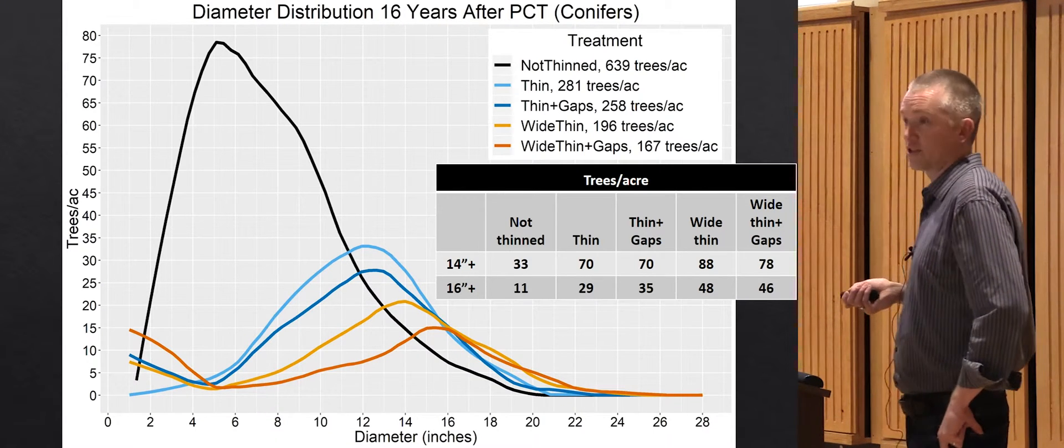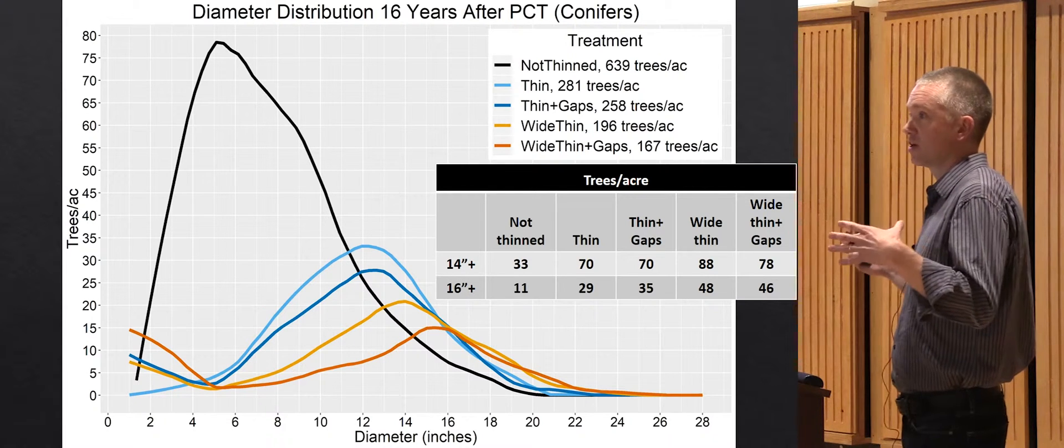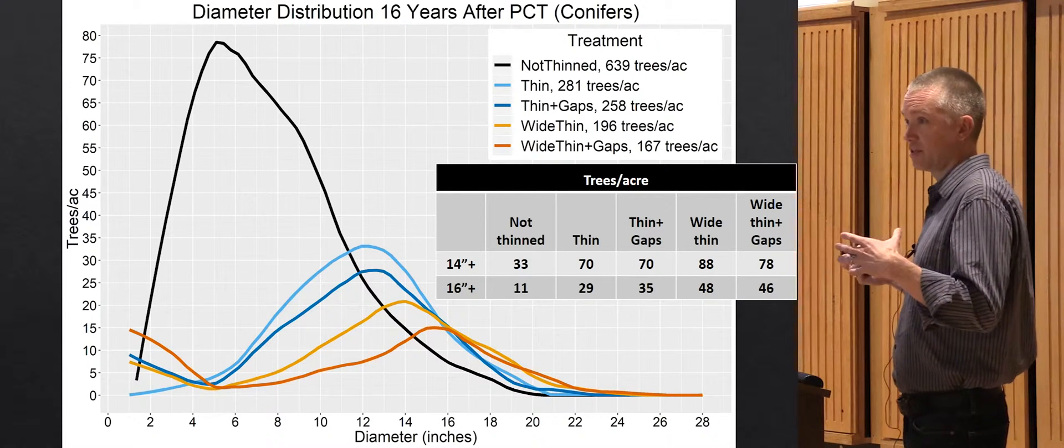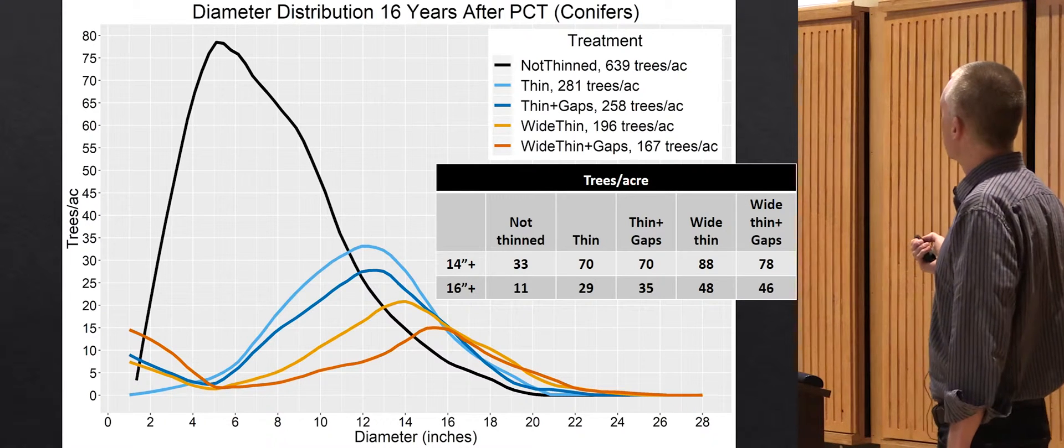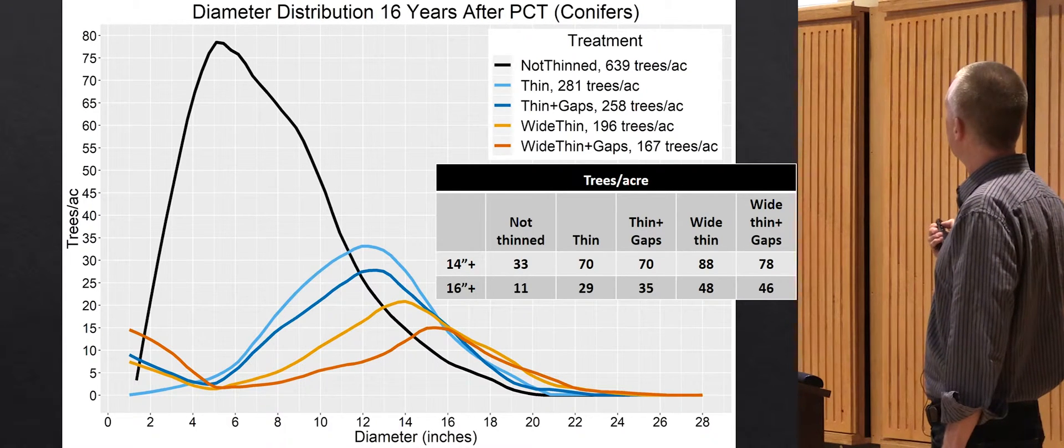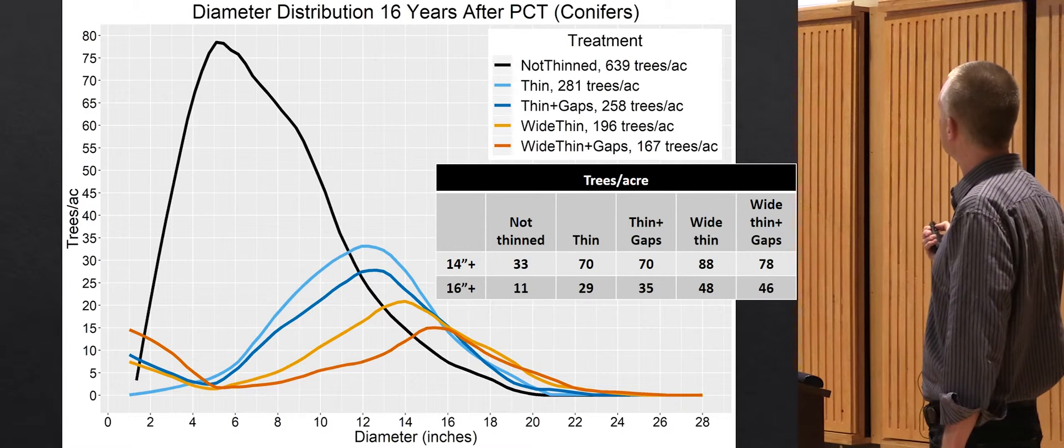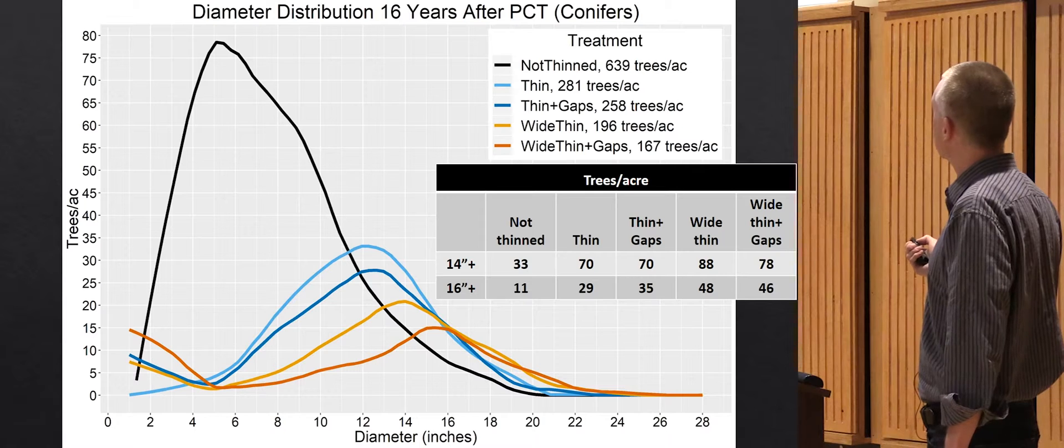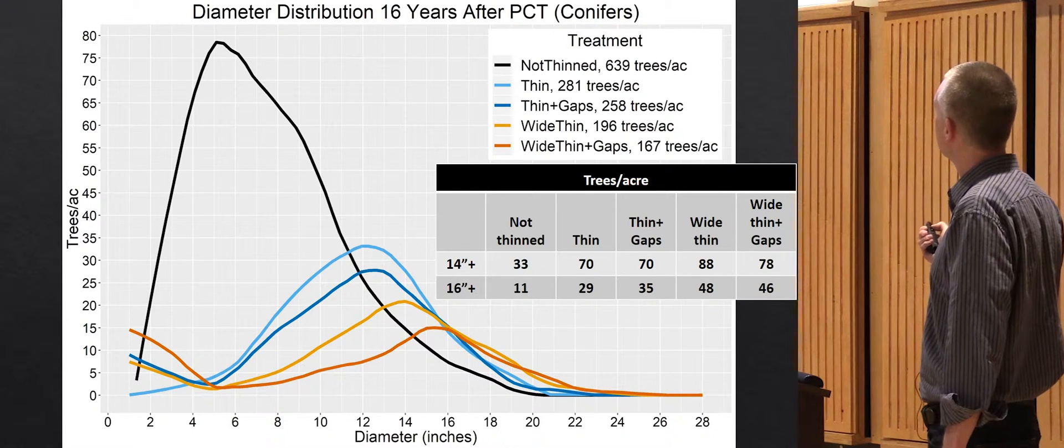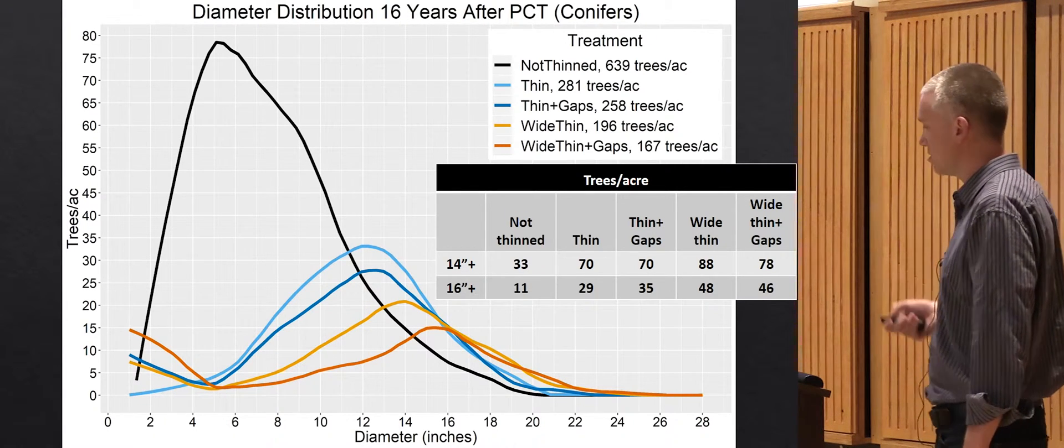If we look just at the largest trees in these stands, if you want these really large, presumably wind firm, large diameter trees, looking at 14 inch plus trees, the largest number of those trees is in these wide thinning treatments. 16 inch plus trees, again, you have most trees in those wide thin treatments.